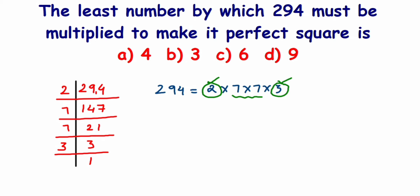But we don't have a pair for 2, we don't have a pair for 3. These two numbers are making it non-perfect square. If I have one extra 2 and one extra 3, then there will be a pair of 2 and a pair of 3, which will make the number a perfect square. They have asked what is the least number to be multiplied.